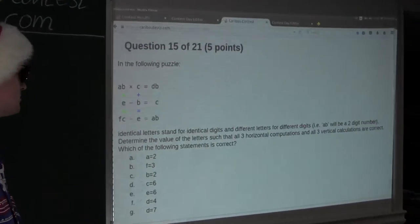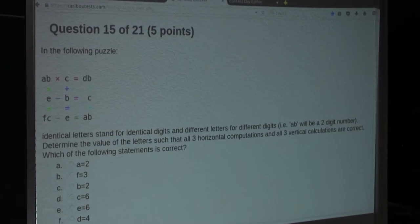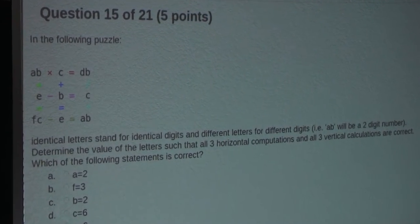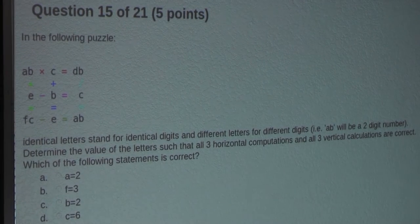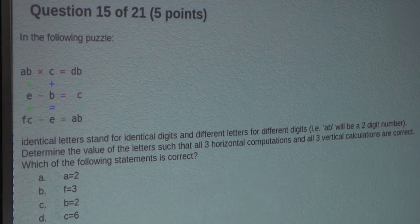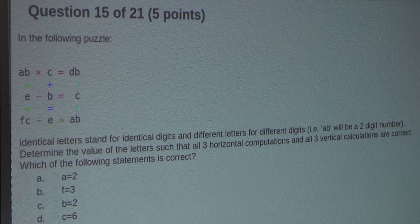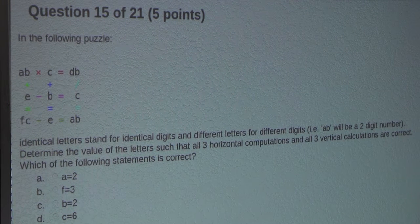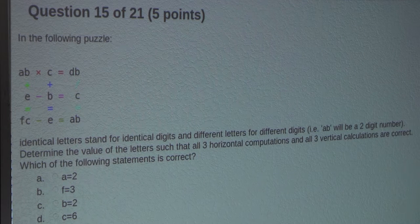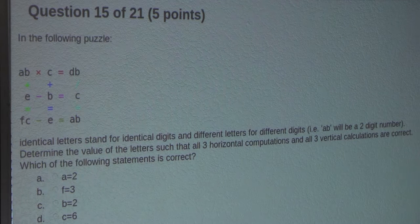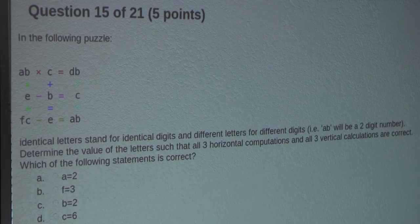So the question is, identical letters stand for identical digits and different letters for different digits. For example, AB will be a two-digit number. Determine the value of the letters such that all three horizontal computations and all three vertical calculations are correct. Which of the following statements is correct?